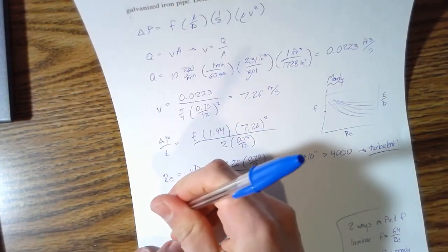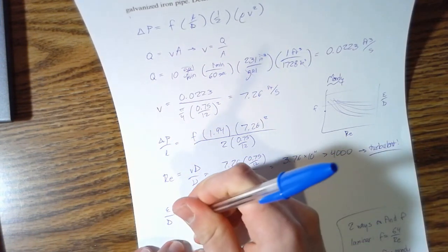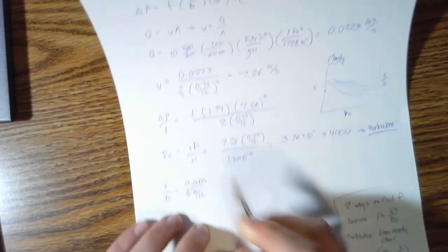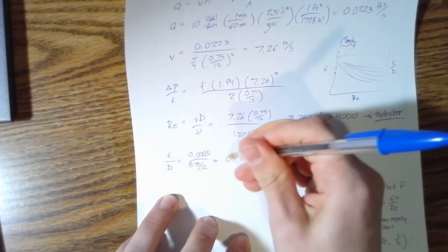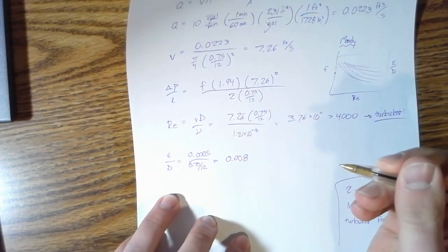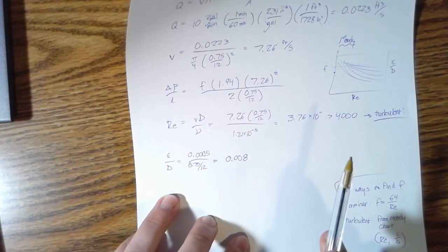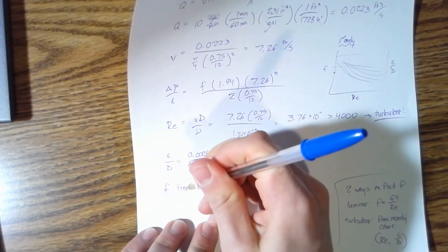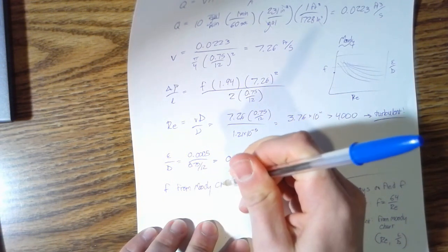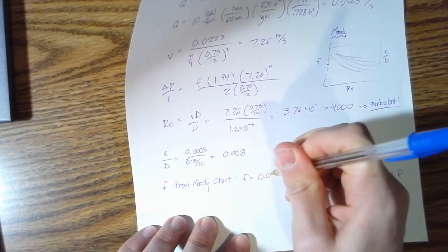So for galvanized iron, your epsilon over D is 0.0005 over 0.75 divided by 12. These relative roughness values will be given to you on an exam, so you might remember a few of them but you won't be tested on remembering them. So we have our epsilon over D and we have our Reynolds number, and so we're going to find an f from the Moody chart. And what do we get? We get f equals 0.037.